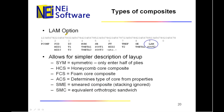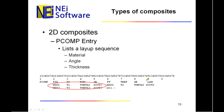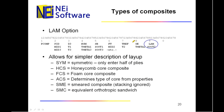There's also, on that PCOMP card — you didn't see it back here — but there's the LAM option. The LAM option lets you do some cool stuff. If you have a symmetric layup, you can put in half of the plies and just tell it it's symmetric, so you can get away with a much shorter card.